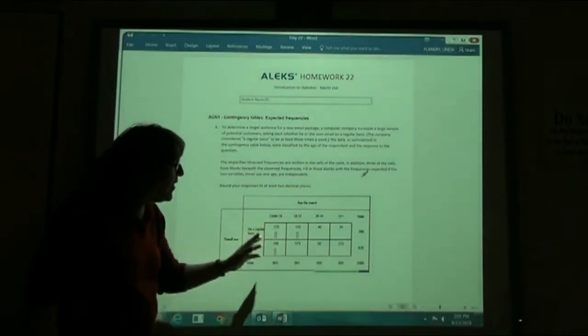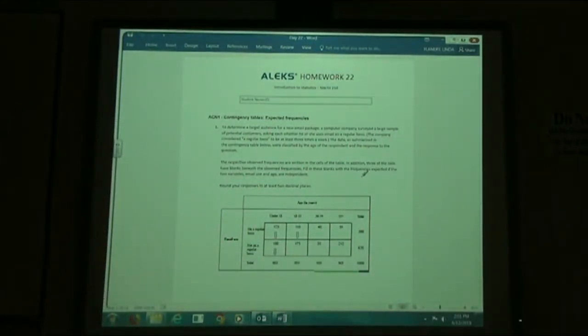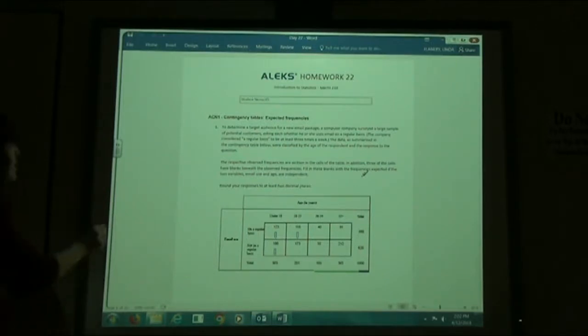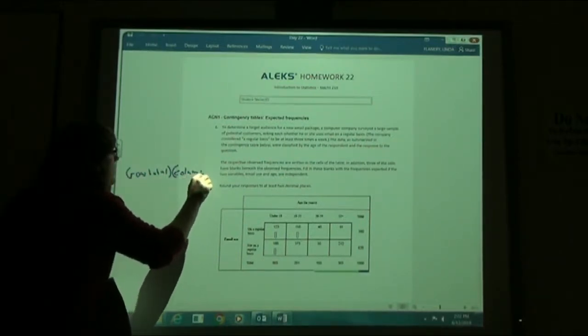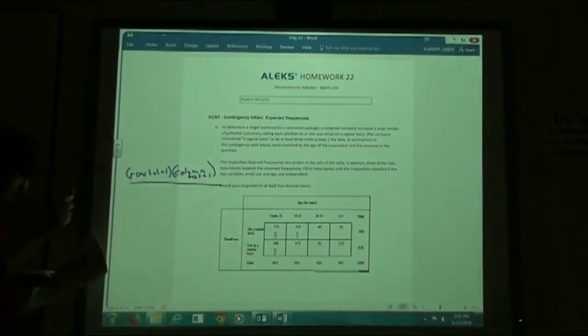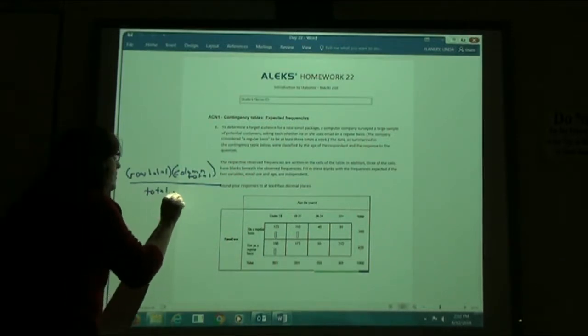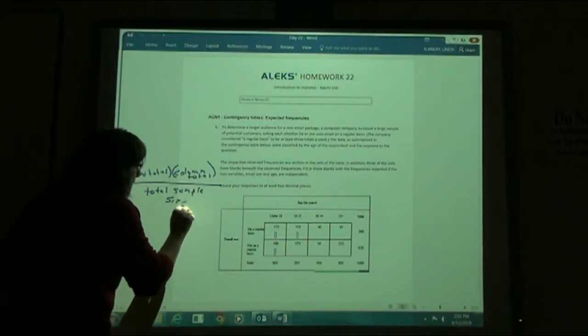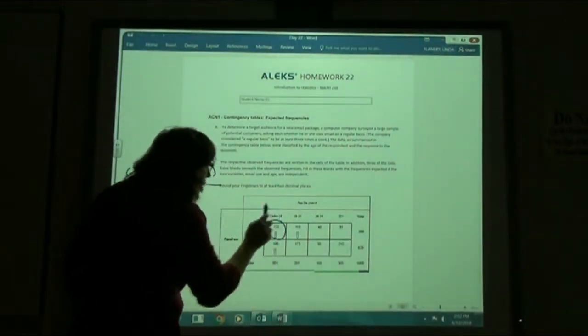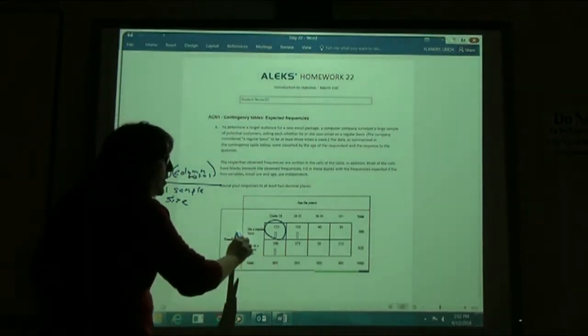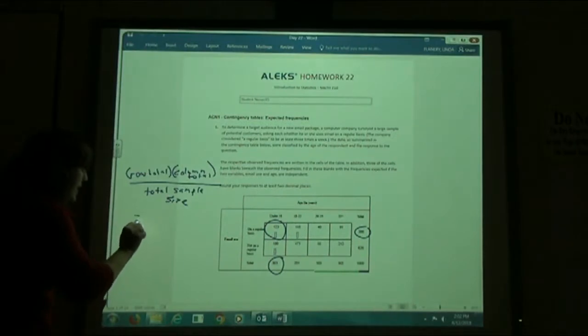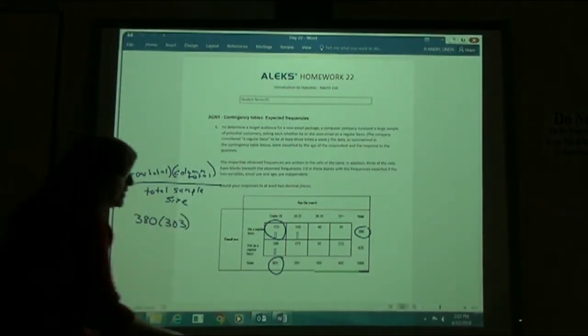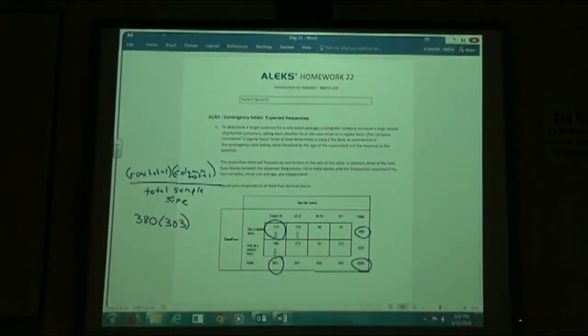So here they're just going to have us fill in three of them. There are actually eight that we could fill in when we're doing our contingency table. And in order to figure out what the value is that goes in that table, you're going to take the row total times the column total and divide that by the total sample size. So in order to figure out this first one here for under 18 on a regular basis, I'm going to take my row total, which is 380, times my column total, which is 303.